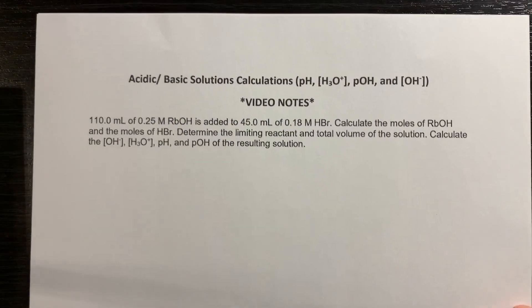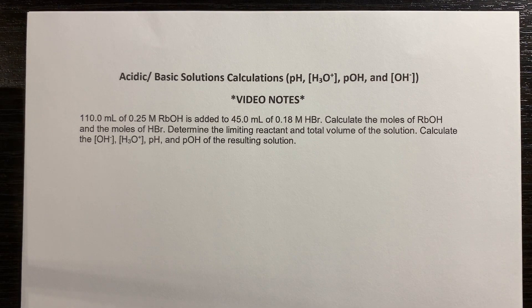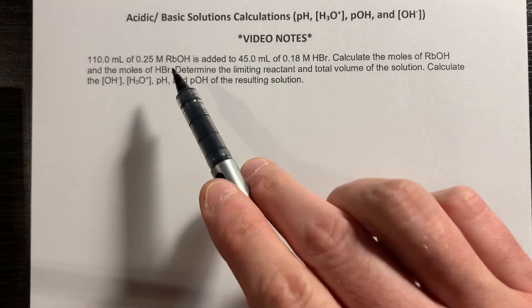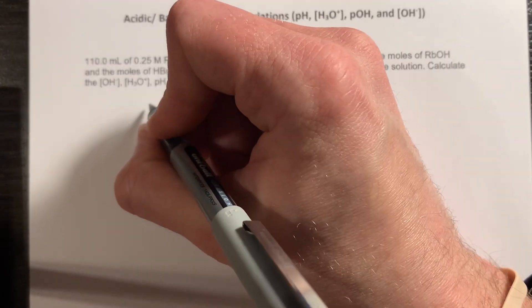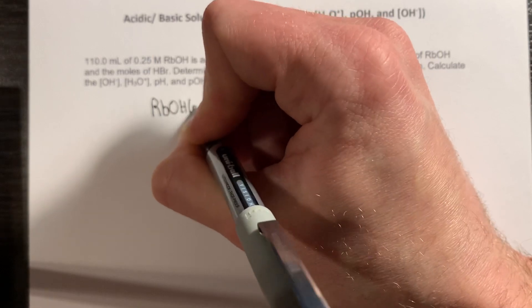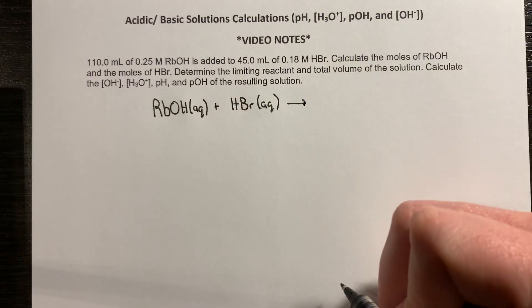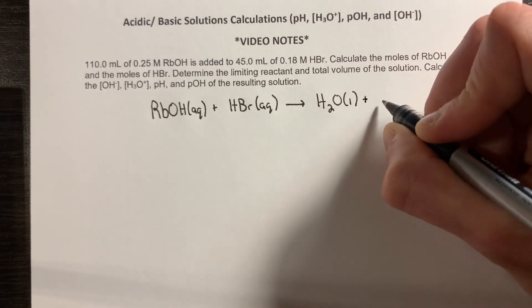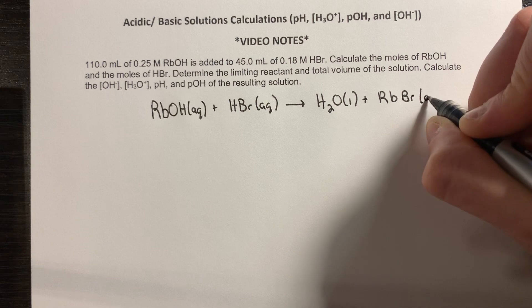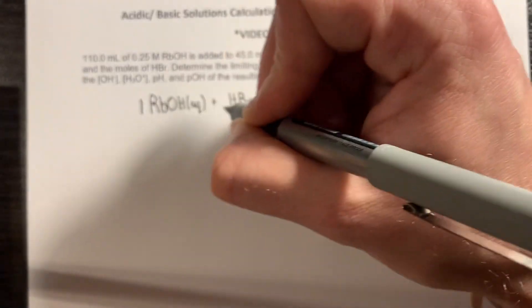We're going to take a look at the flip side, where we add an acid to a base but find an excess of base as a result of the reaction. In this case, we're dealing with rubidium hydroxide and hydrobromic acid. I'll write out the equation: rubidium hydroxide, aqueous, plus hydrobromic acid, also aqueous, undergoes an acid-base reaction to form liquid water and rubidium bromide. Checking that it's balanced — indeed, atoms and mass are conserved.